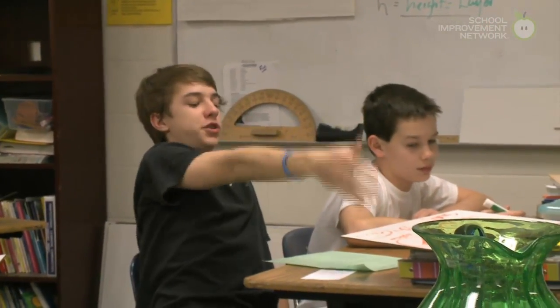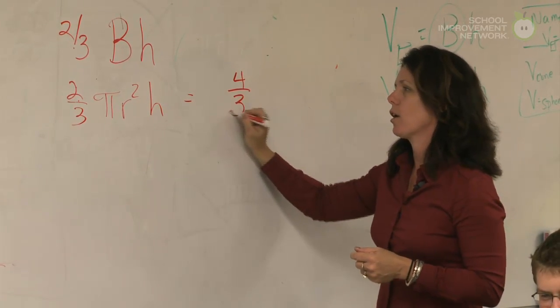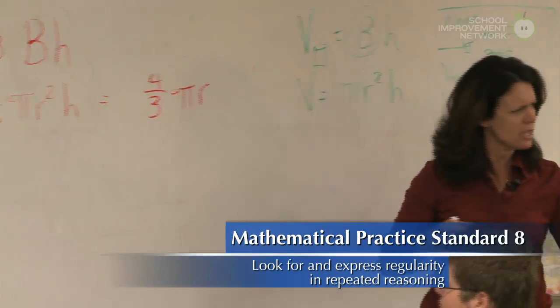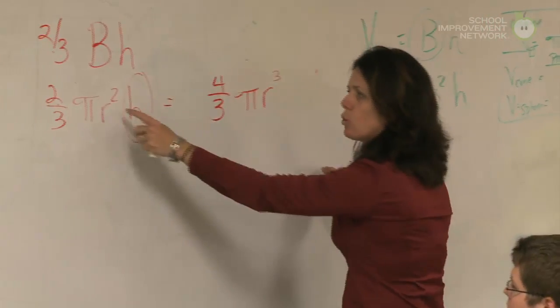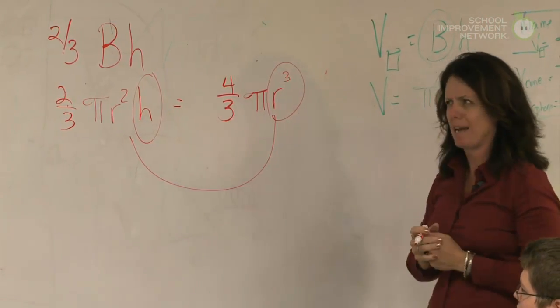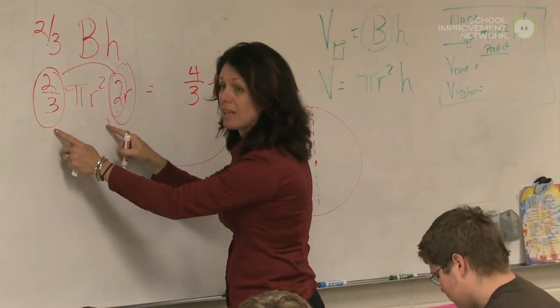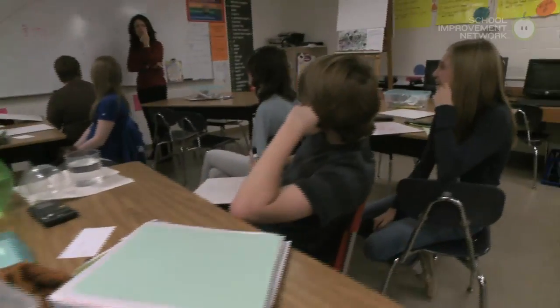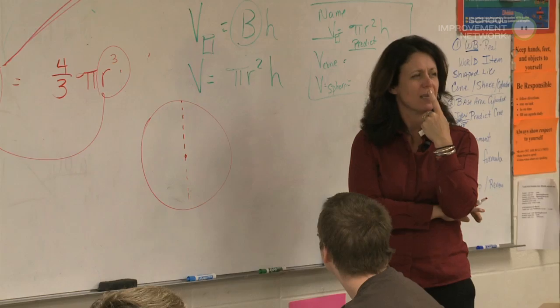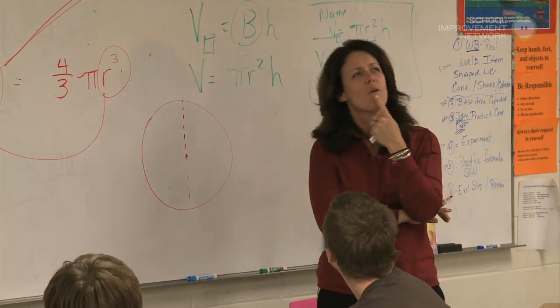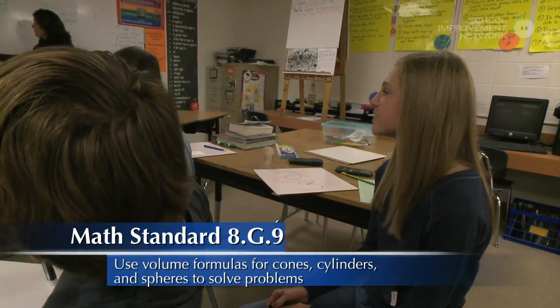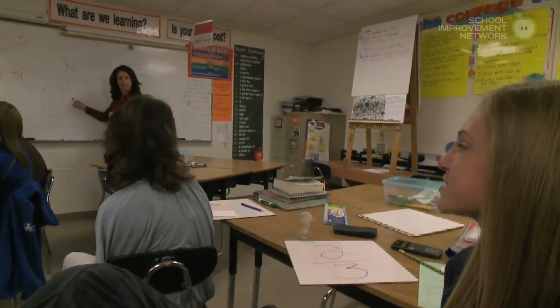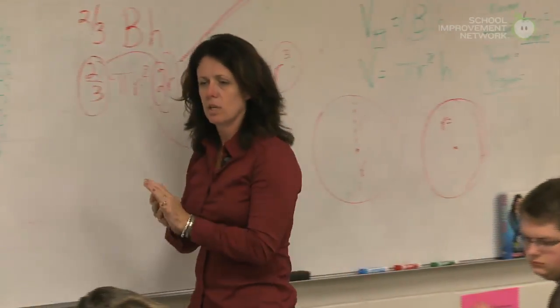A student asks: why would you give us a false sheet? The sheet says four-thirds. In clarifying this misconception, Kimberly incorporates Mathematical Practice Standard 8 to help students apply shortcuts in arriving at the volume formula for a sphere. She asks: could radius squared times height be the same as radius cubed? Students combine their like terms — something they've been doing for months. A student is confused: how does height equal the diameter? The teacher clarifies: the height of the sphere equals the diameter, which equals two times the radius.